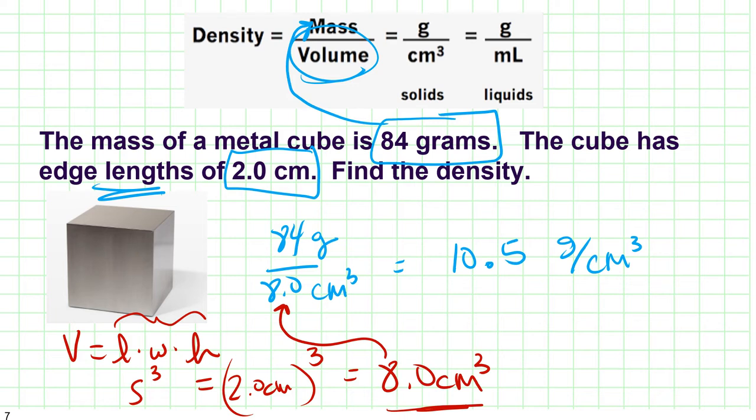Let's do a quick sig fig check. Here I have one, two sig figs. Here I have one, two sig figs. I get to keep one, two sig figs. This five is going to turn that zero into a one. And so our final answer is going to be just about 11 grams per cubic centimeter because of sig figs.